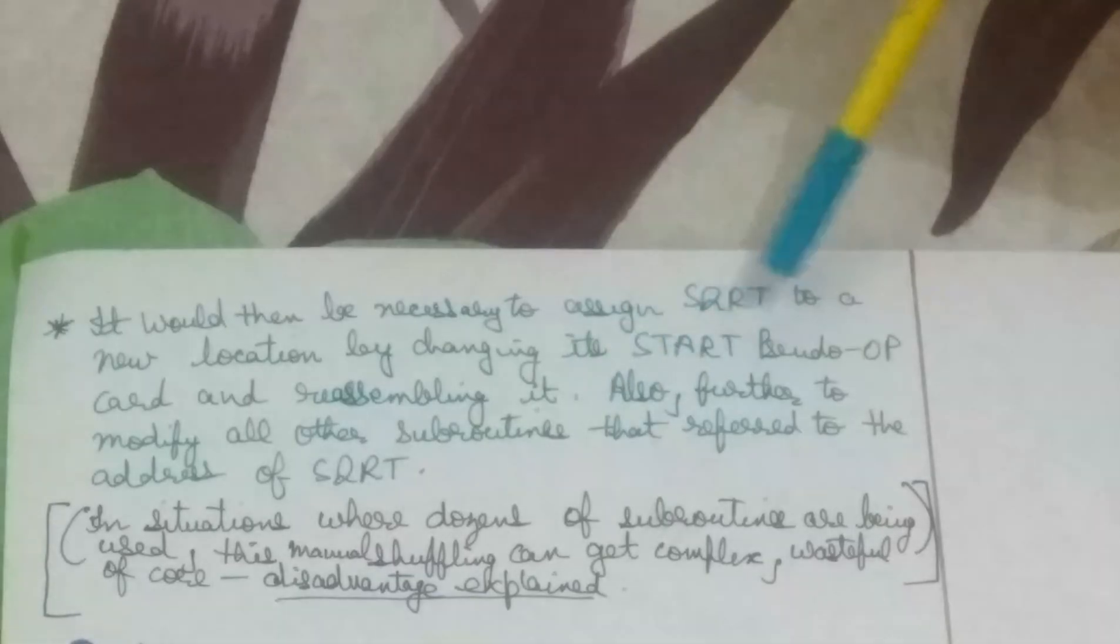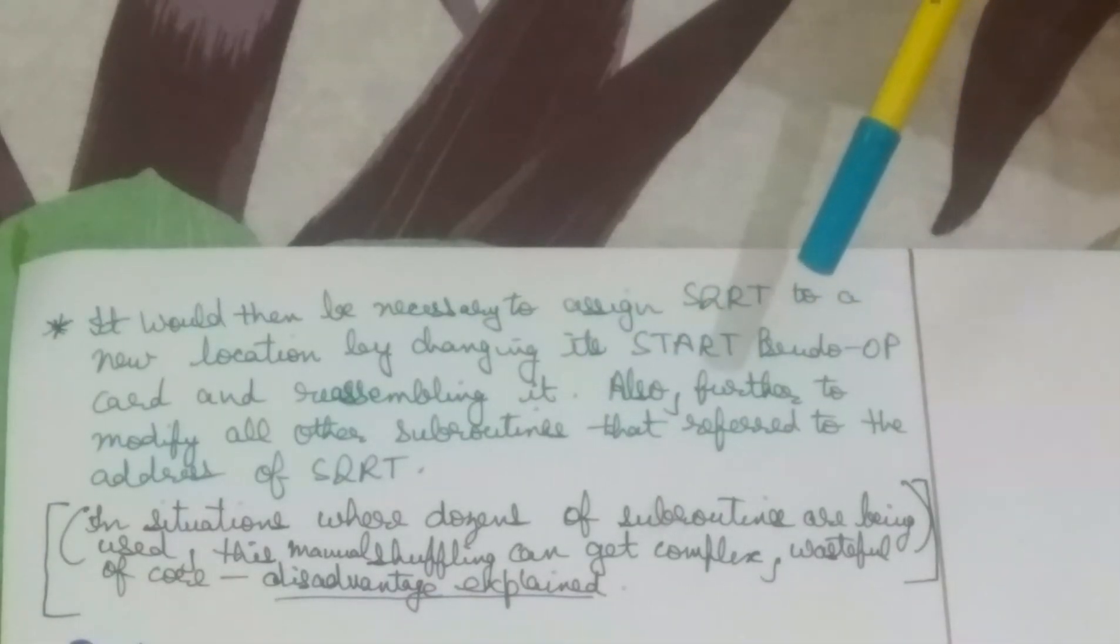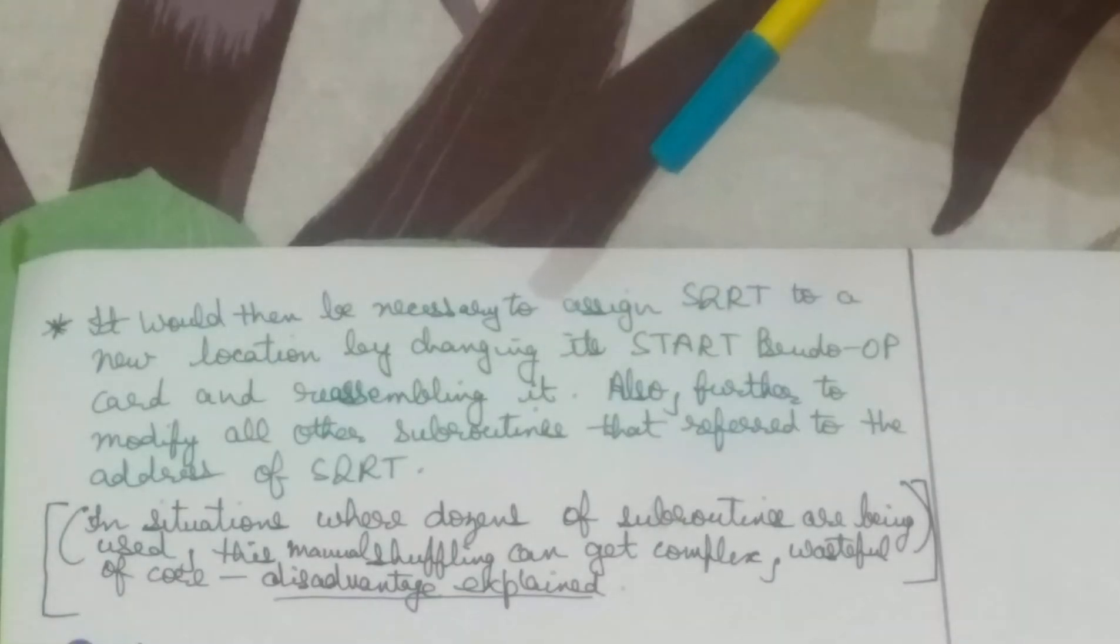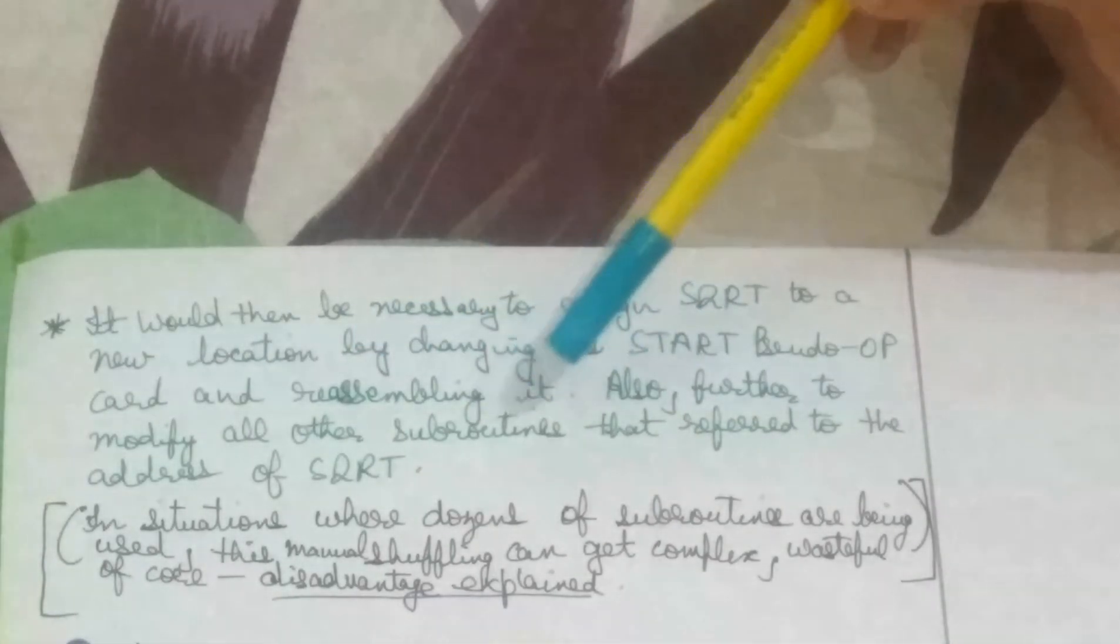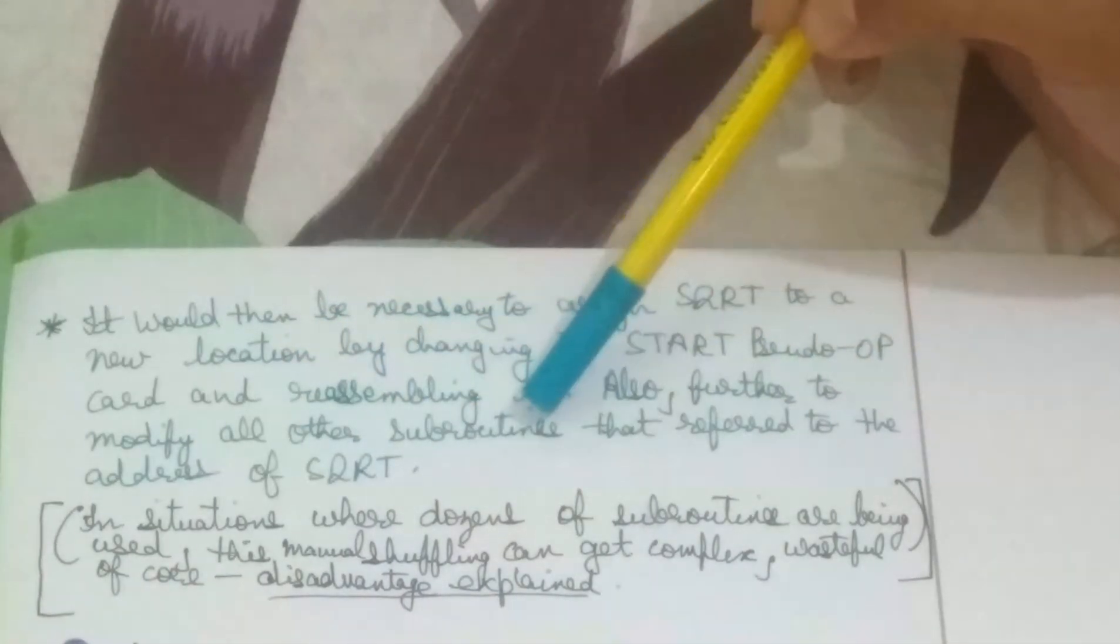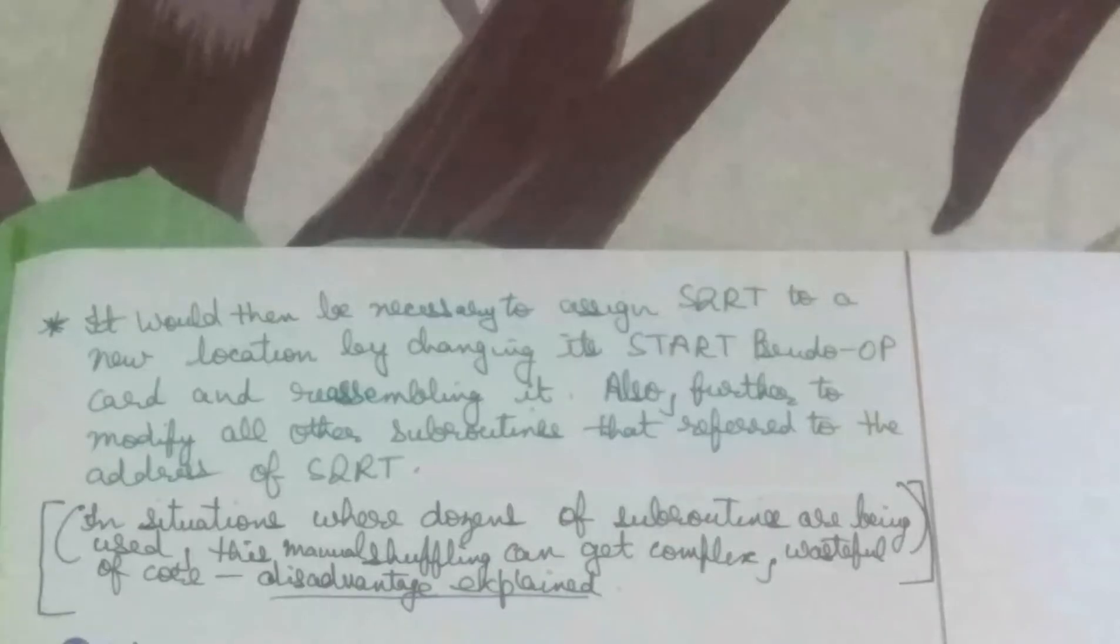It would then be necessary to assign SQRT to a new location by changing its START pseudo operation and reassembling it. This START pseudo operation we have read about in the assemblers video. If you haven't seen them, please refer to my assembler videos. And it will be reassembled. Also further, we need to modify all other subroutines that referred to that address of SQRT. Suppose that some other subroutines have referred to that address of SQRT. The main method has increased, so we will give a new location to SQRT. And wherever SQRT was referred to, that will need to be changed.